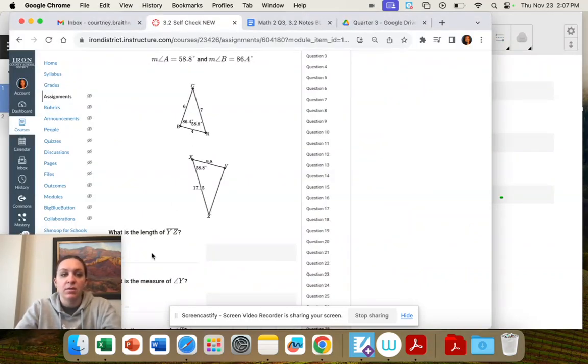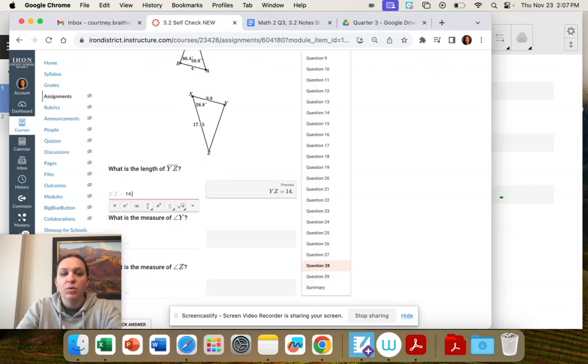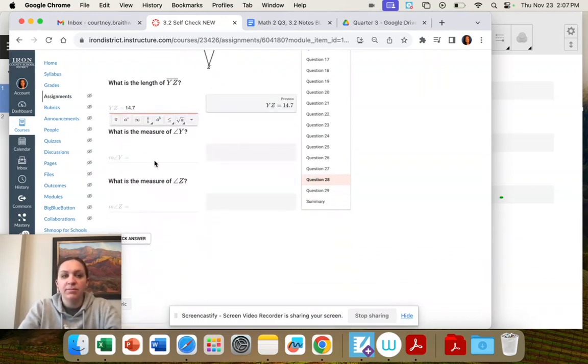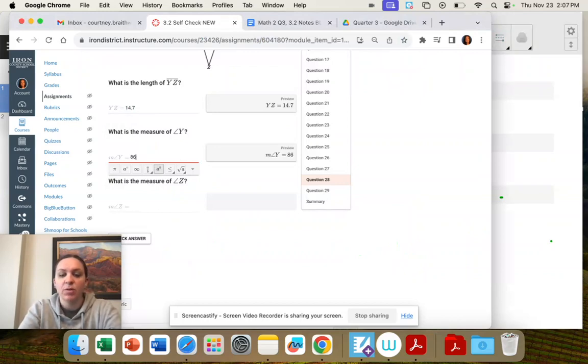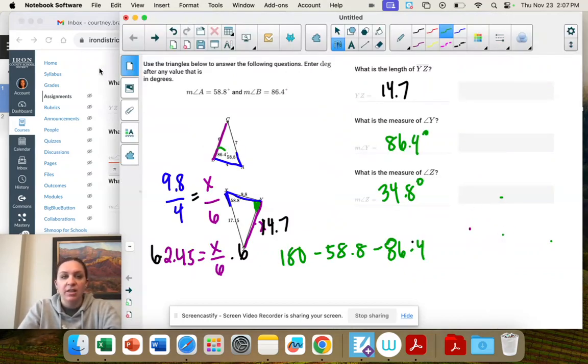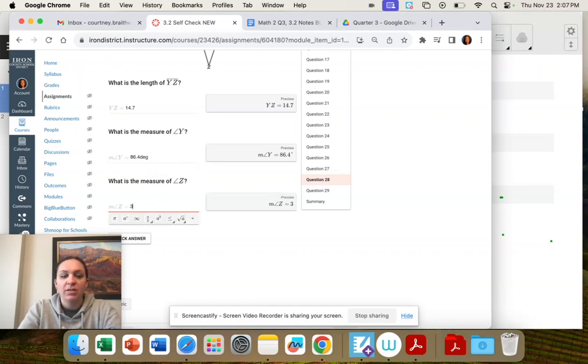Okay, 14.7. I have to go back and forth. 86.4. And I'm going to put DEG so it's a degree. And then 34.8. Again, I'm going to put DEG.